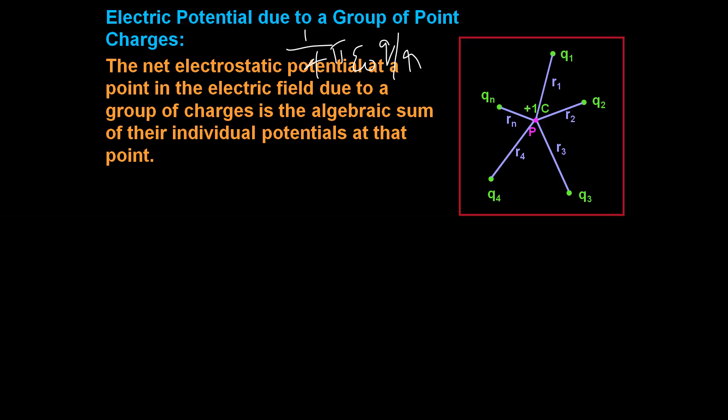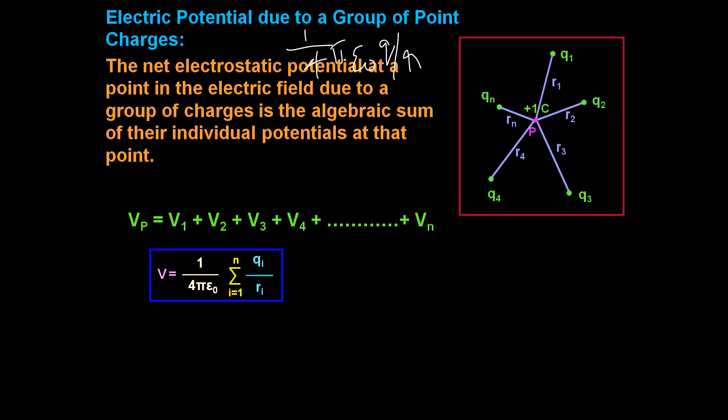So if the individual potentials are called v1, v2, v3, and so on, then the total potential will be Vp = v1 + v2 + ... + vn. As we know, potential due to individual charges is 1 by 4 pi epsilon zero, q by r. So in the form of summation, you can write the net potential V = (1 / 4πε₀) × Σ (i=1 to n) qi by ri. This gives you the equation for potential due to a group of point charges.